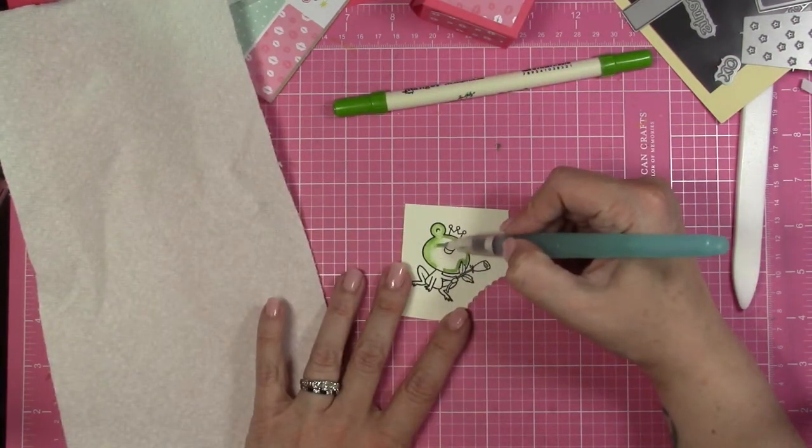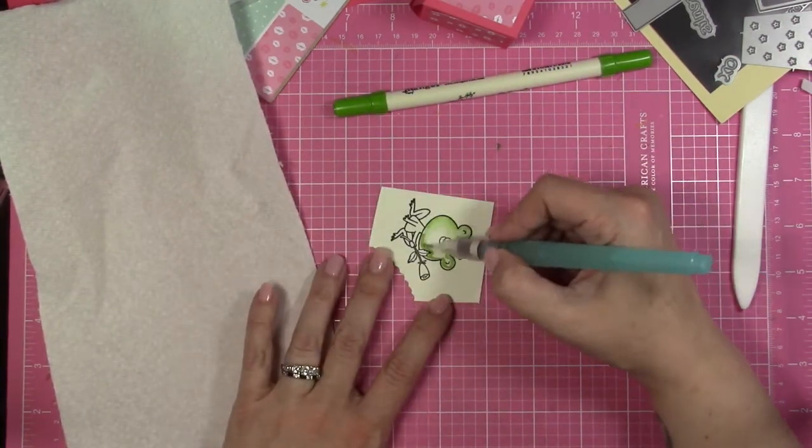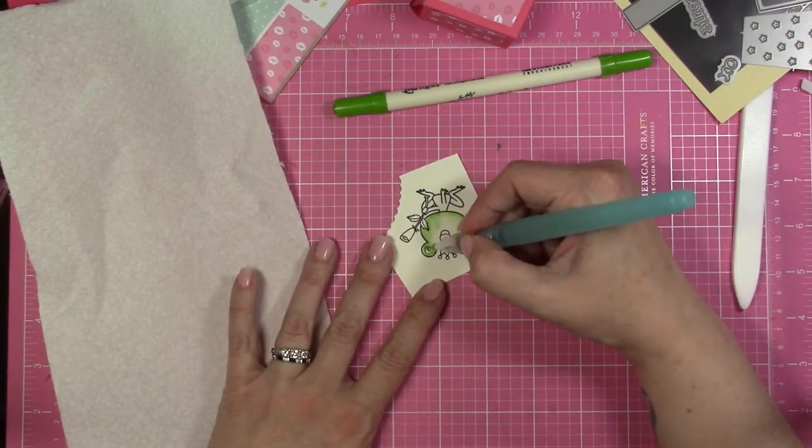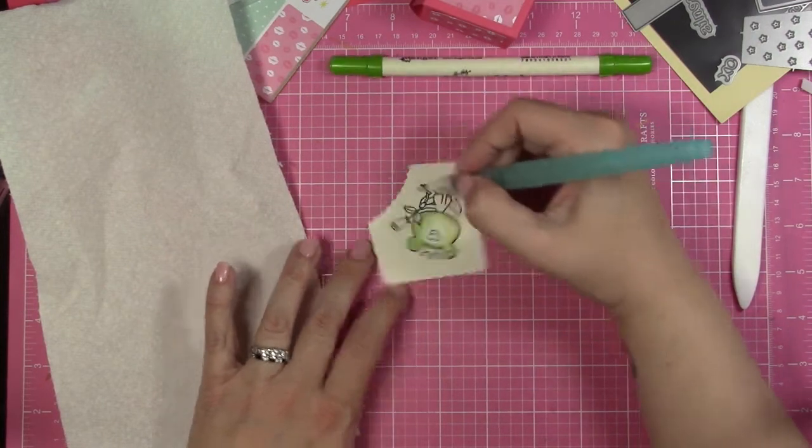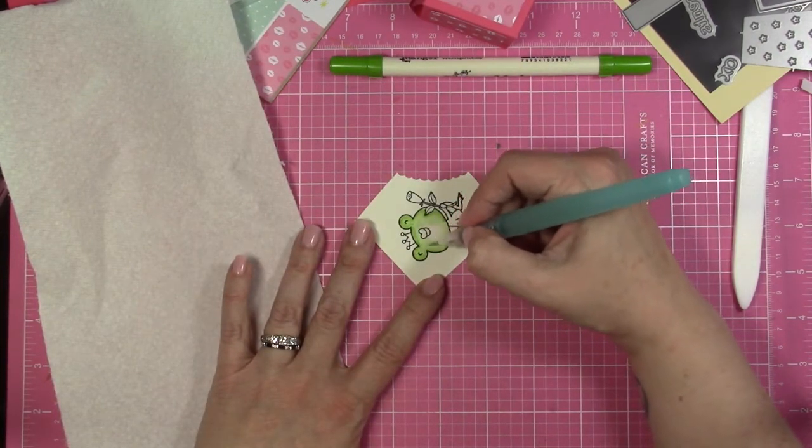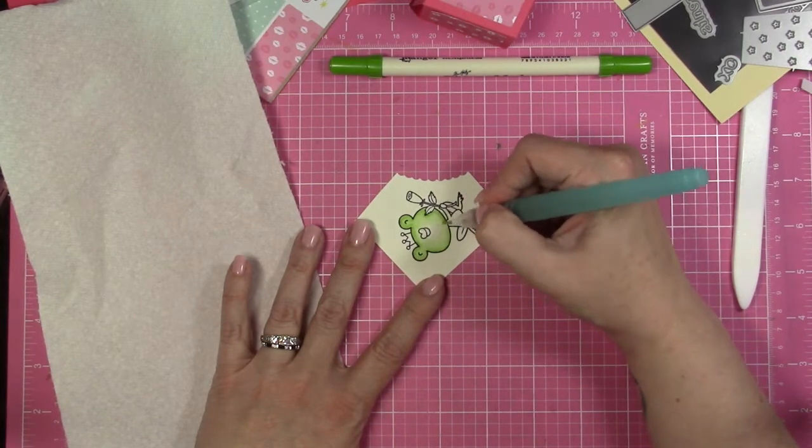Now, when you're working with a water brush or even a paint brush, and you're working with distress ink like this, or any watercolor really, when you've only stamped the image with the Versamark, you really want to make sure you don't get too much water along the outside edge of your image, because it can bleed out of the outer line of the image.